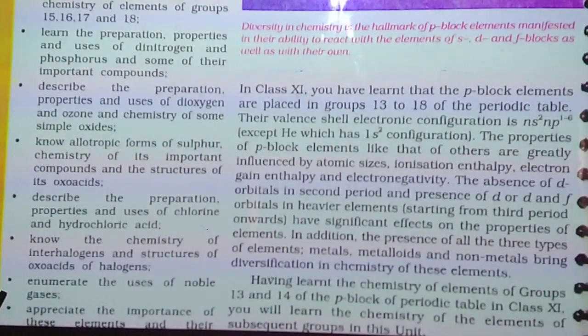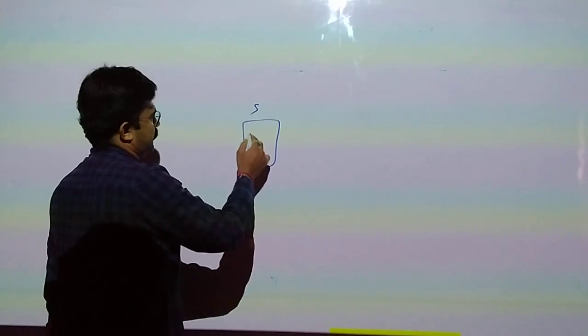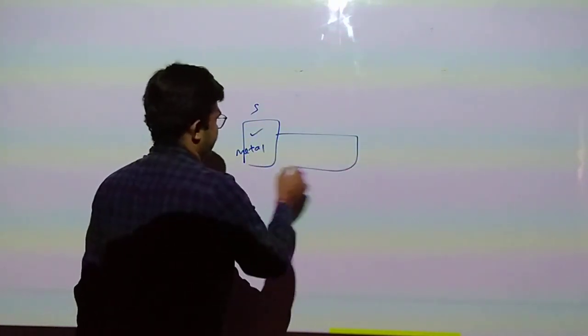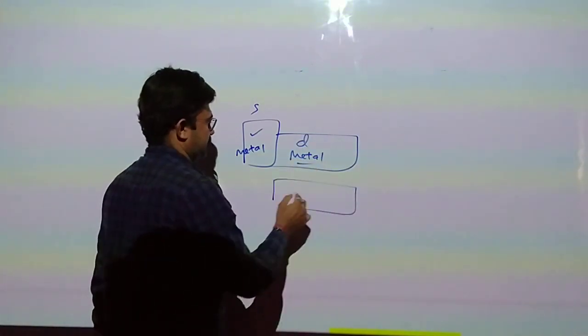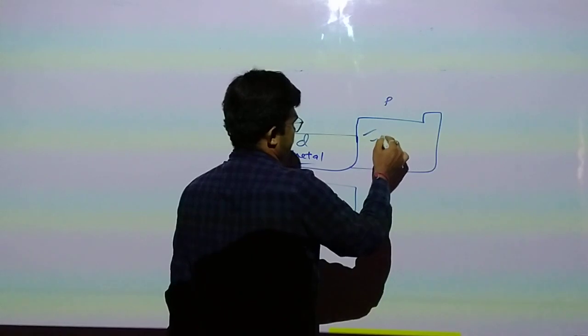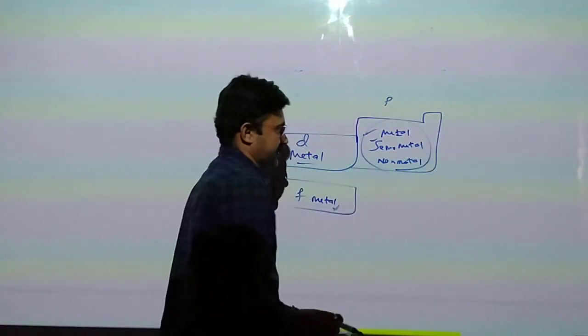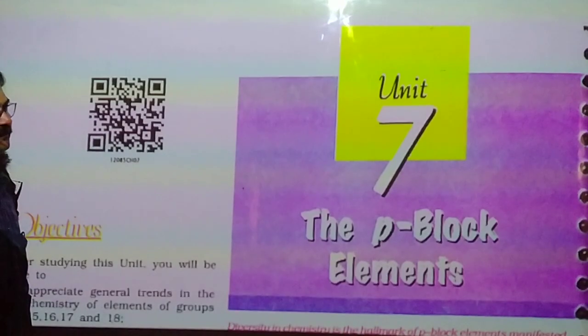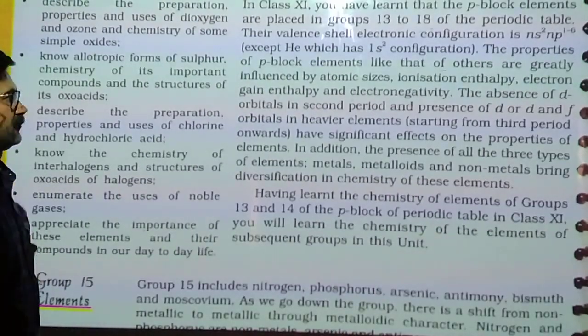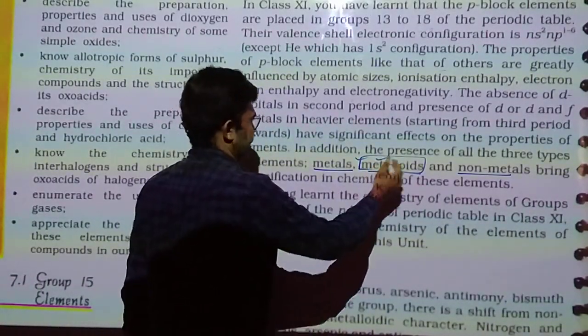In the s-block all elements are metal, in the d-block all elements are metal, in the f-block all elements are metal. But in the p-block, metal, semi-metal, and non-metal, all types of elements are present. Metallic, non-metallic, semi-metals, and inert gases.